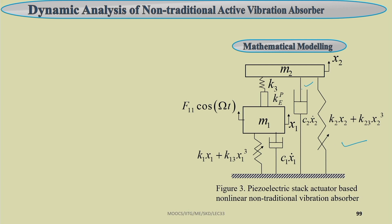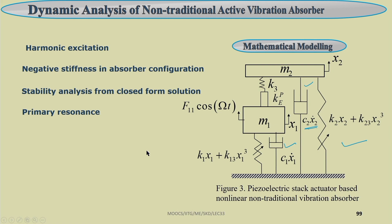Previously a damper was used between the secondary mass and the base; now, in addition to damping, a non-linear spring can be used. The primary system, previously having only a non-linear spring, can have a damper added. One can study several combinations of these systems depending on applications. A forcing F₁₁cos(ωt) is added — here only harmonic excitation is considered (no parametric excitation). One can perform stability analysis from the closed-loop solution, considering the primary resonance condition.